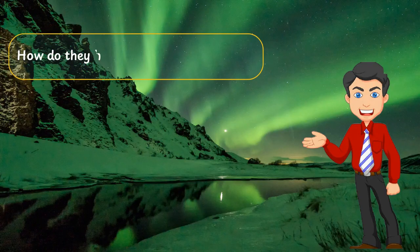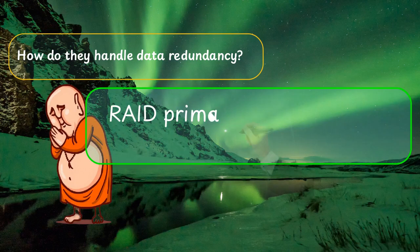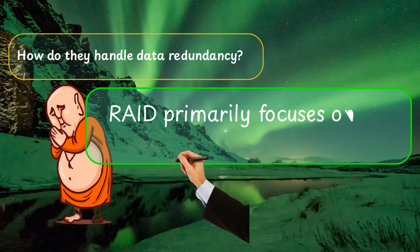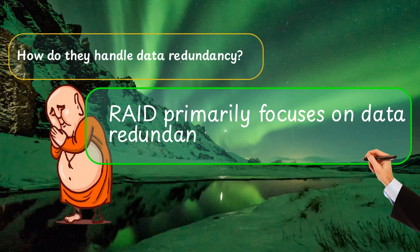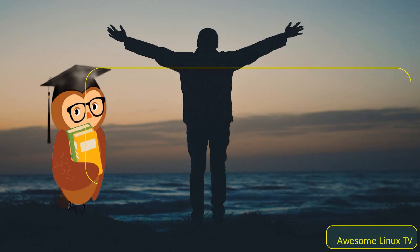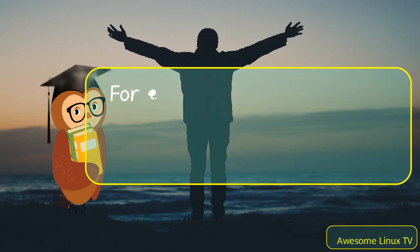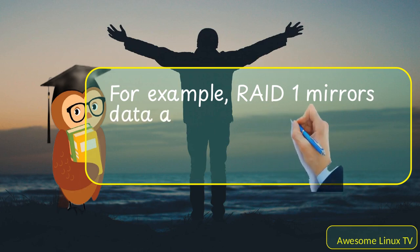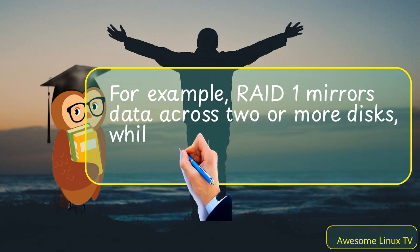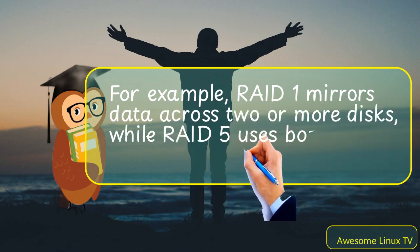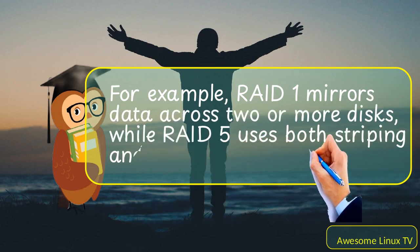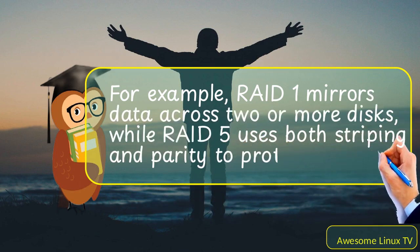How do they handle data redundancy? RAID primarily focuses on data redundancy and performance. For example, RAID 1 mirrors data across two or more disks, while RAID 5 uses both striping and parity to protect data.